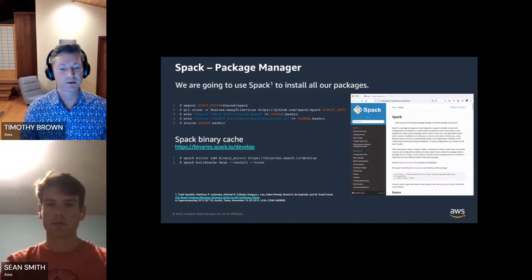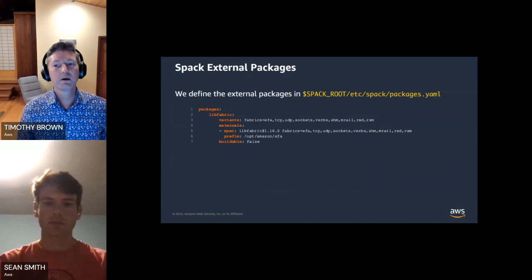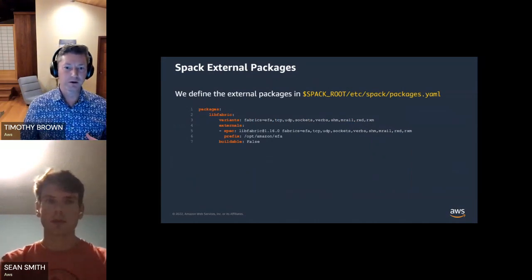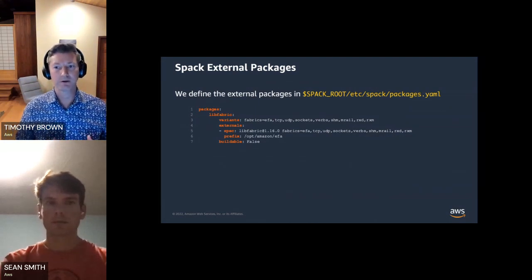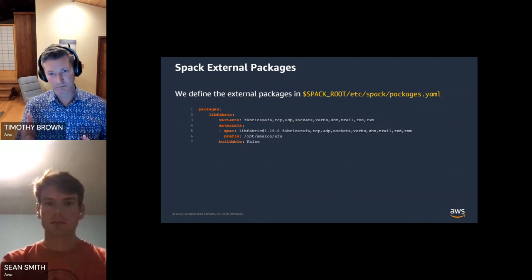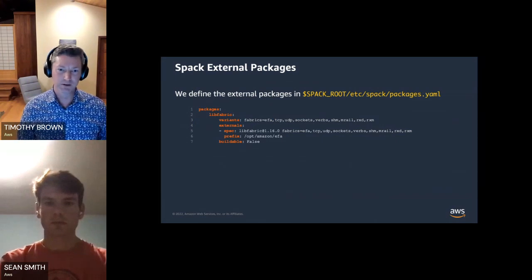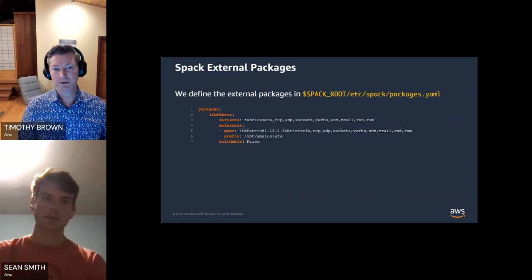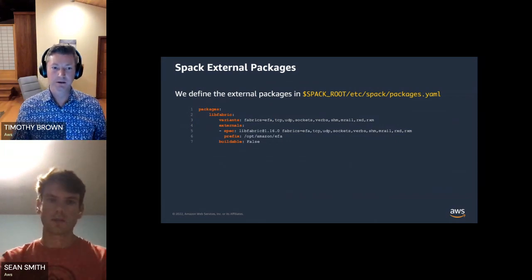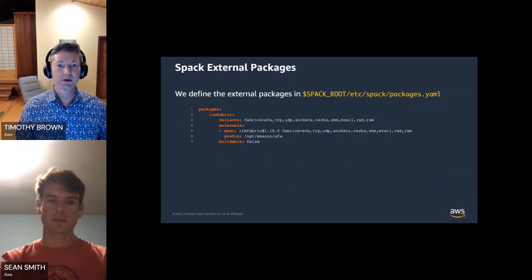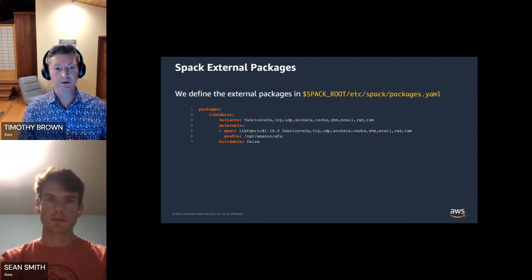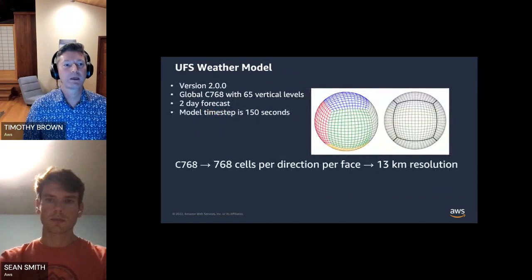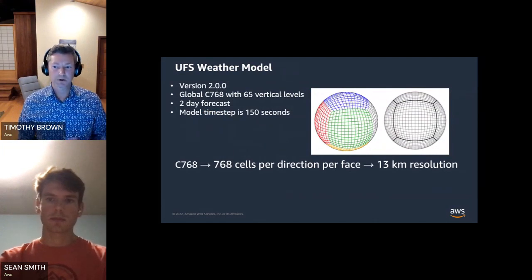Since EFA is already installed on the cluster, we tell Spack it's an external package. In a packages.yaml file put into the Spack root etc/spack/packages directory, we define libfabric with variants: fabrics = efa, tcp, udp, and so on. We specify version 1.16 with the prefix of where it's installed and set buildable: false — meaning if a package needs libfabric, it won't rebuild it but will use the installed one. We then install the UFS Weather Model — the current global weather model used by NOAA.